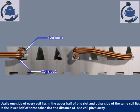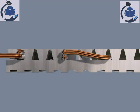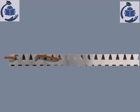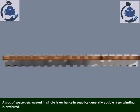The other side of the same coil lies in the lower half of some other slot, at a distance of one coil pitch away. Since a slot of space gets wasted in single layer winding, in practice, double layer winding is generally preferred.